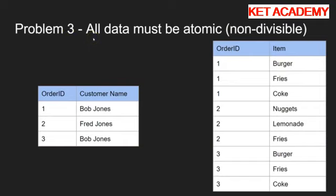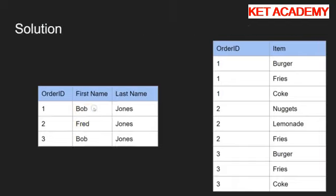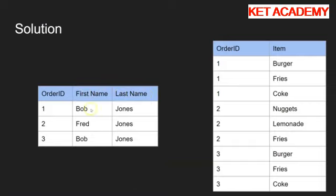Third thing: all data must be atomic or non-divisible. The problem is if you look at the customer name 'Bob Jones' - you can see that Bob Jones isn't atomic. It can be divided further into Bob's first name and last name, and that's no good because that makes it a composite value. It needs to be separated out because those are different things. So you create a column for their first name and a column for their last name and you put them in separate cells. That's how you put a database table into first normal form.